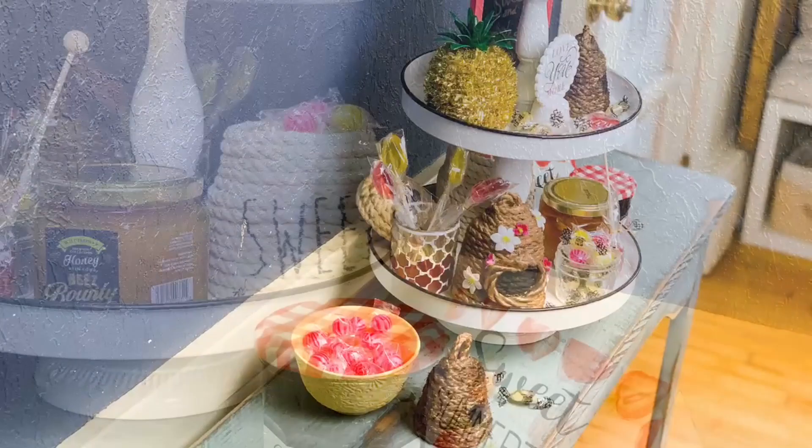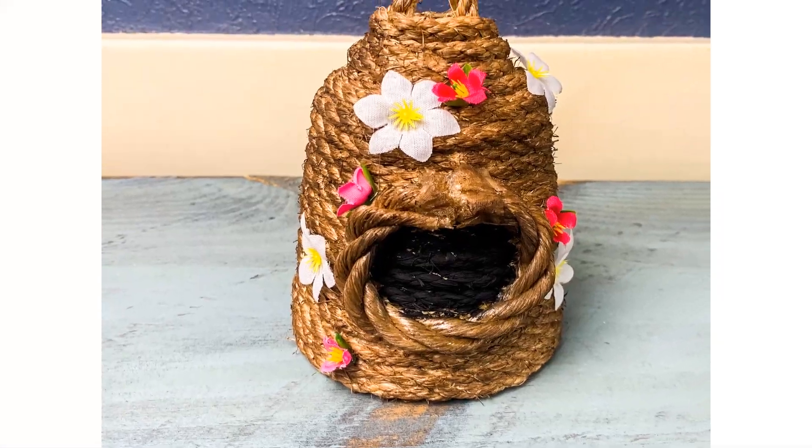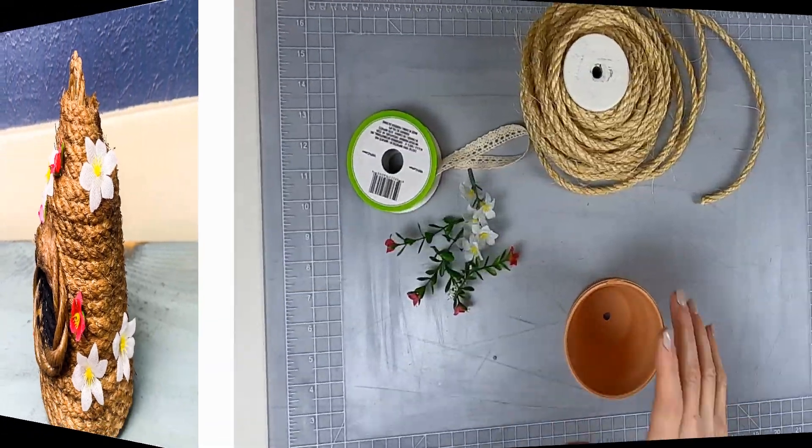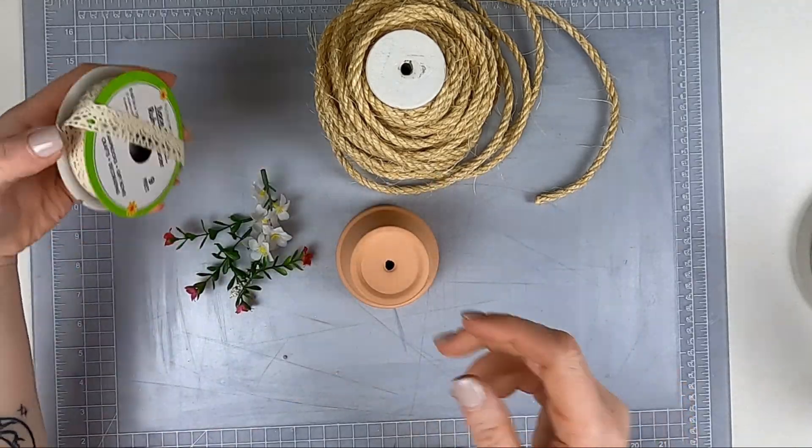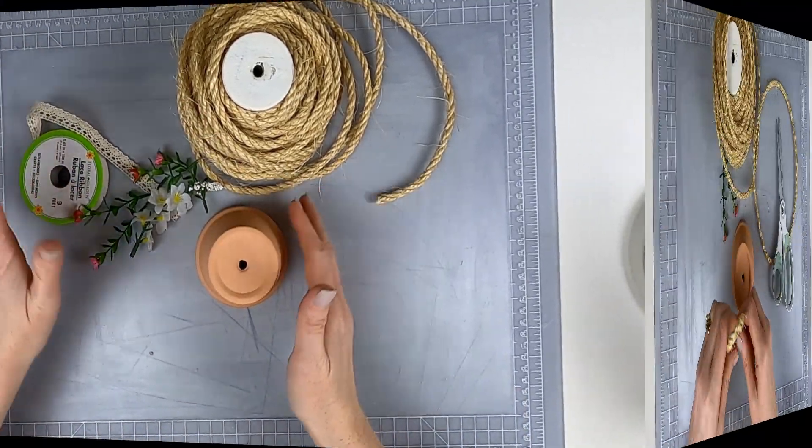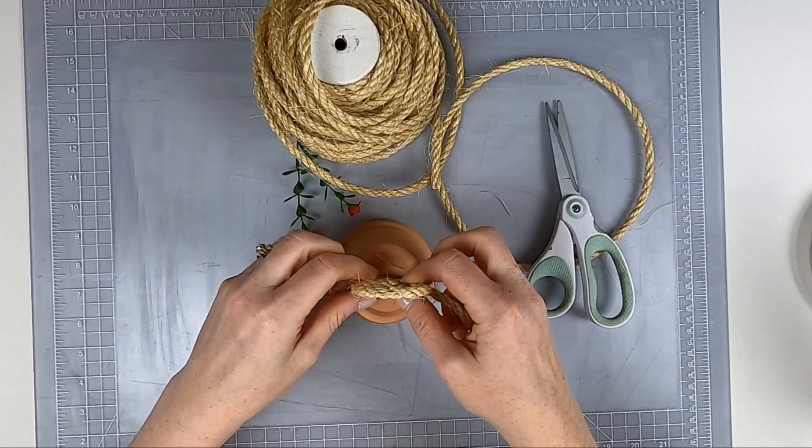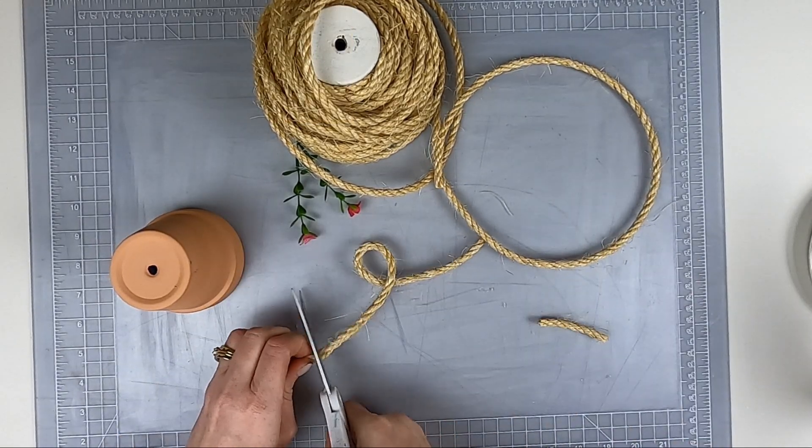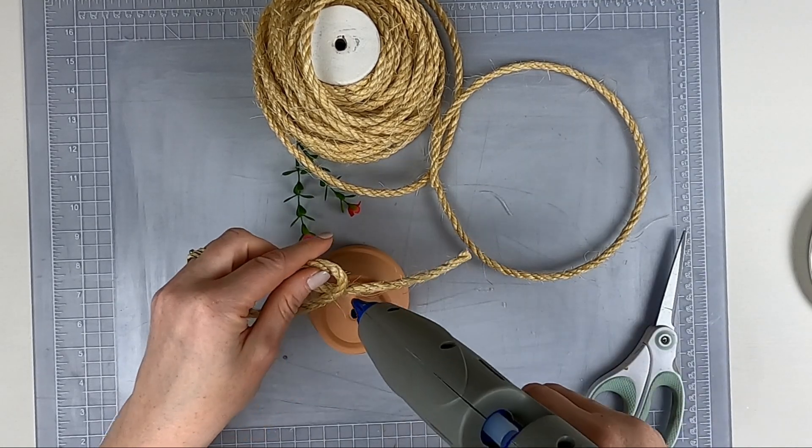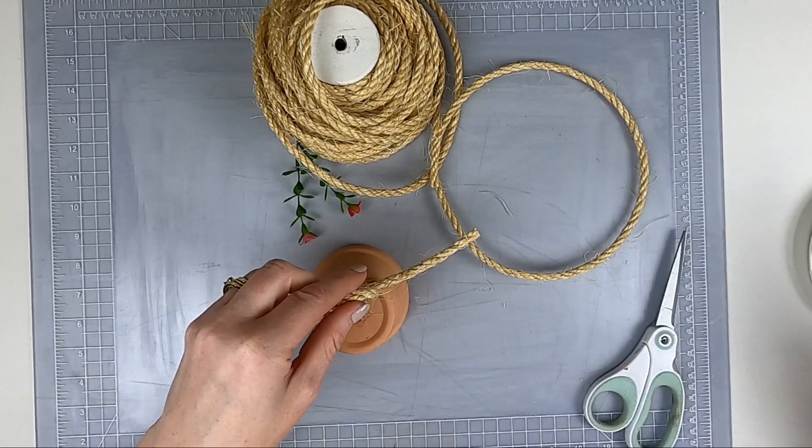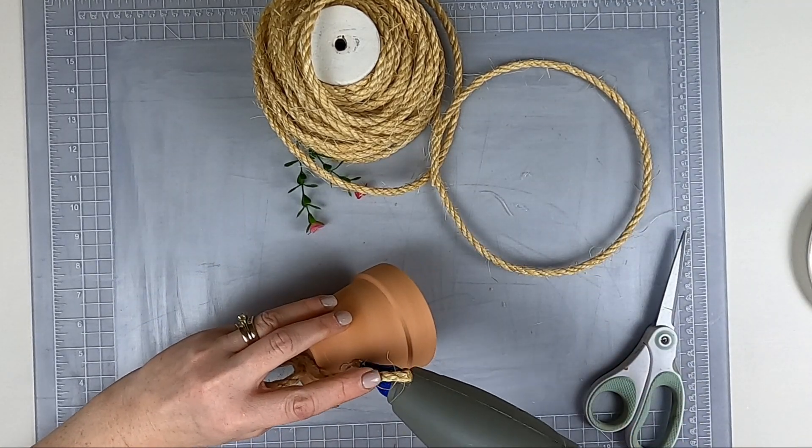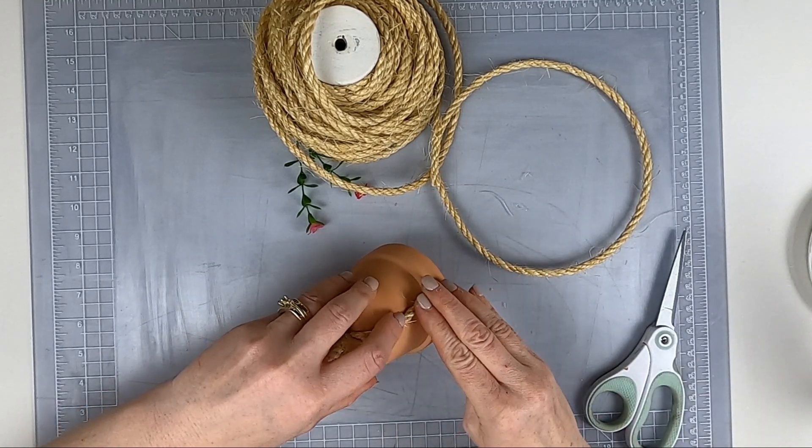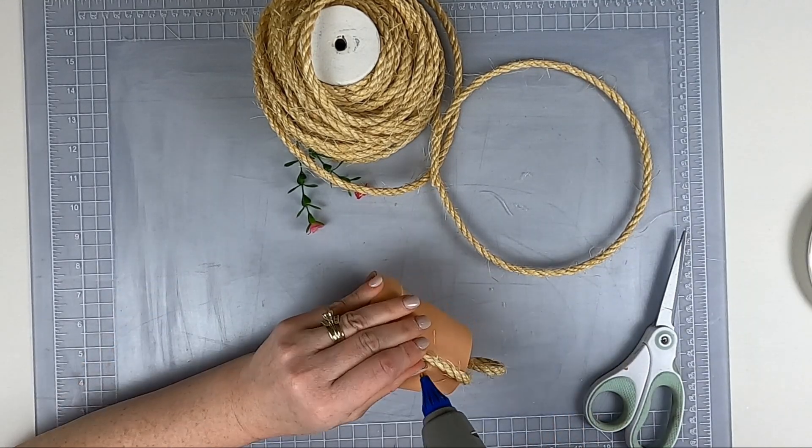Okay, so I am making my first beehive ever. I have some rope and I am wrapping it around a dollar tree planter. I make a loop for the top of the hive and I'm gonna hot glue it right to the planter, and then I just hot glue the sides.